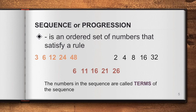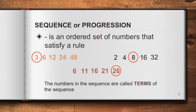The numbers in the sequence are called terms of the sequence. For instance, 3 is the first term of the sequence, 8 is the third term of the sequence, and 26 is the fifth term of the sequence.